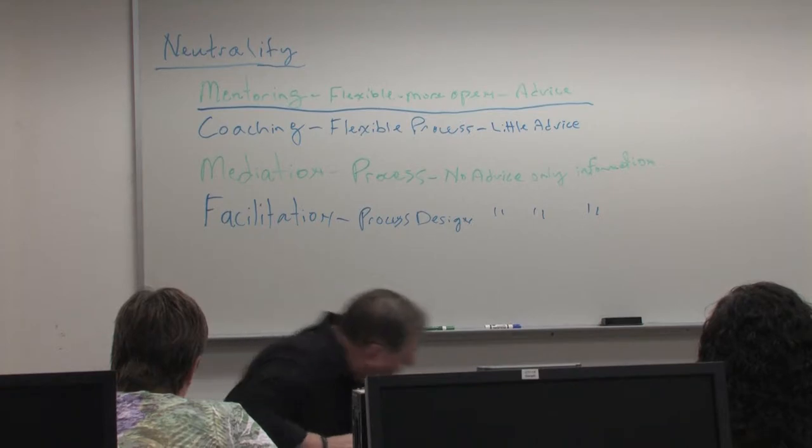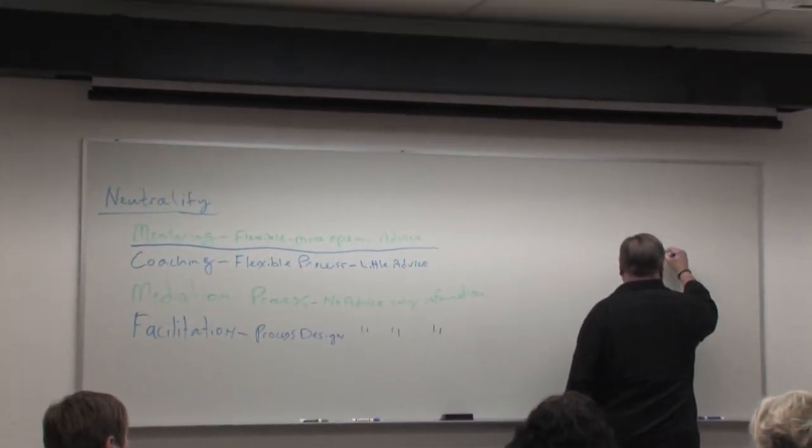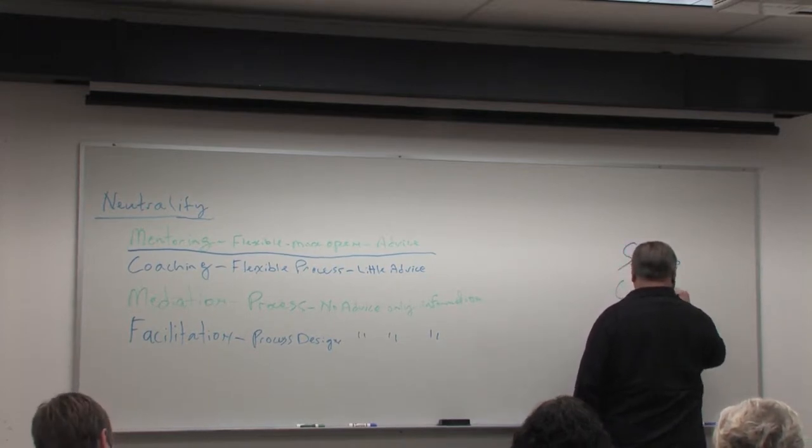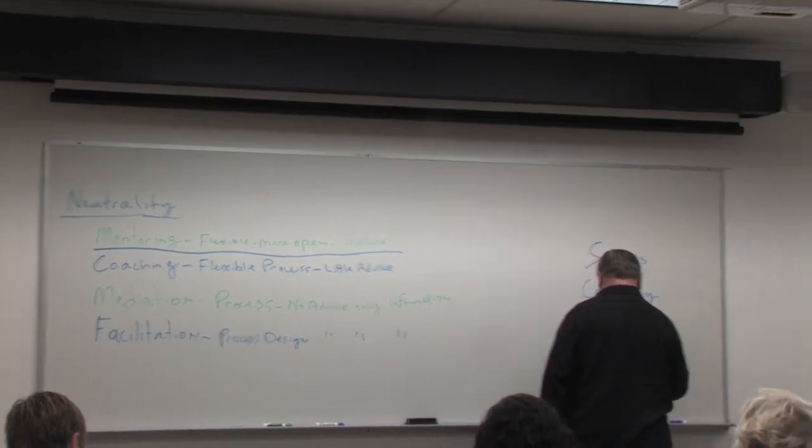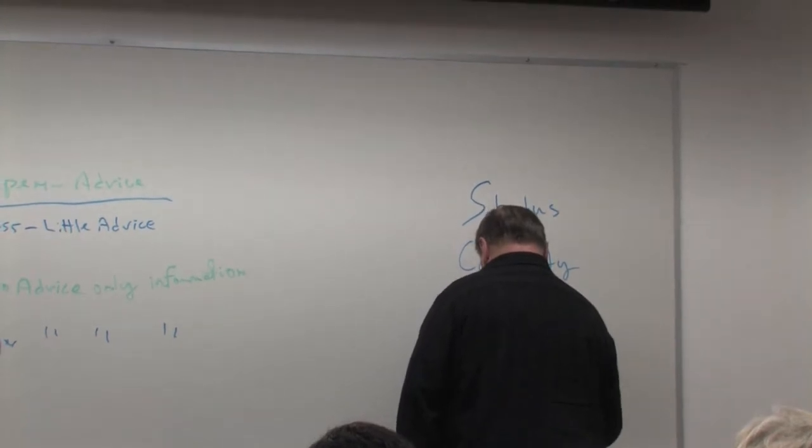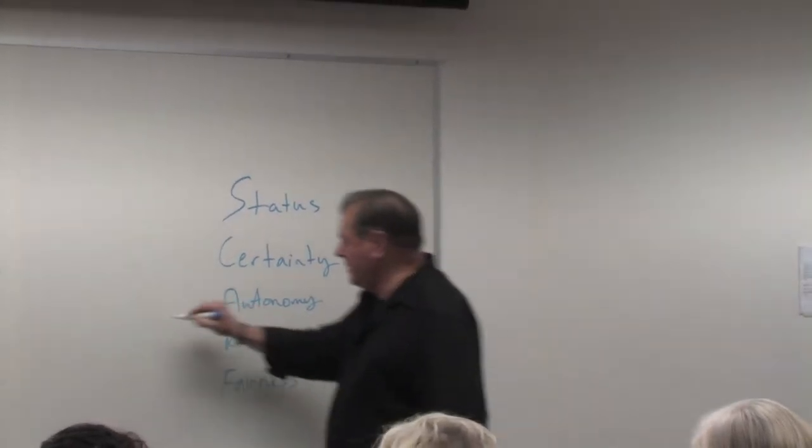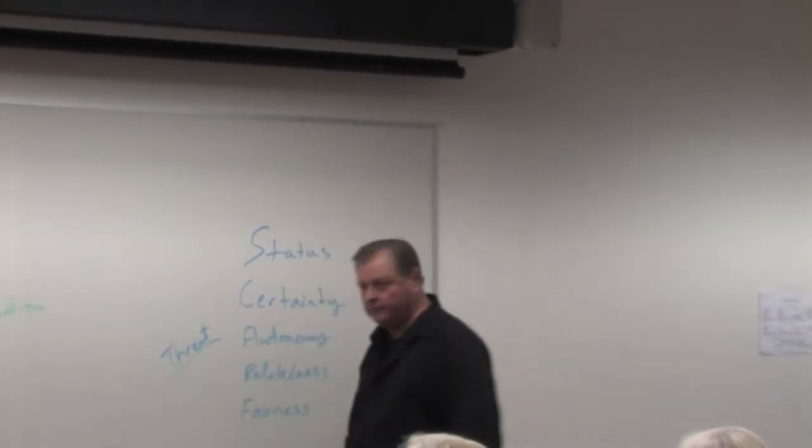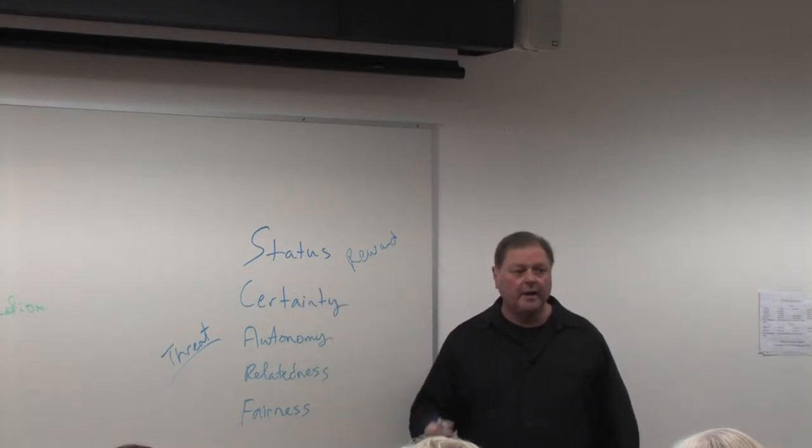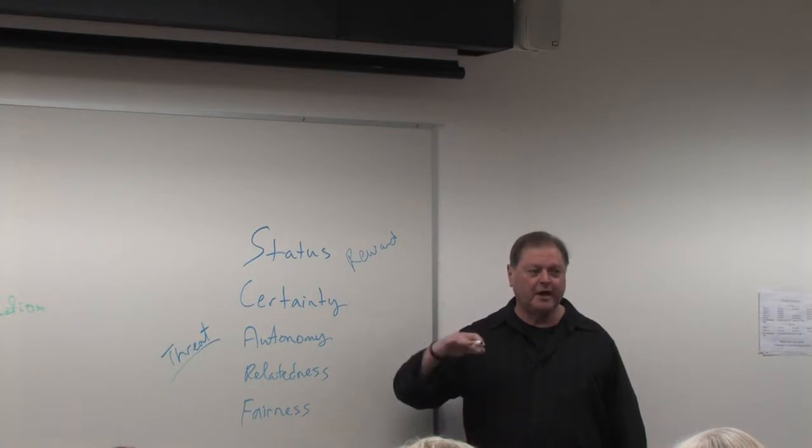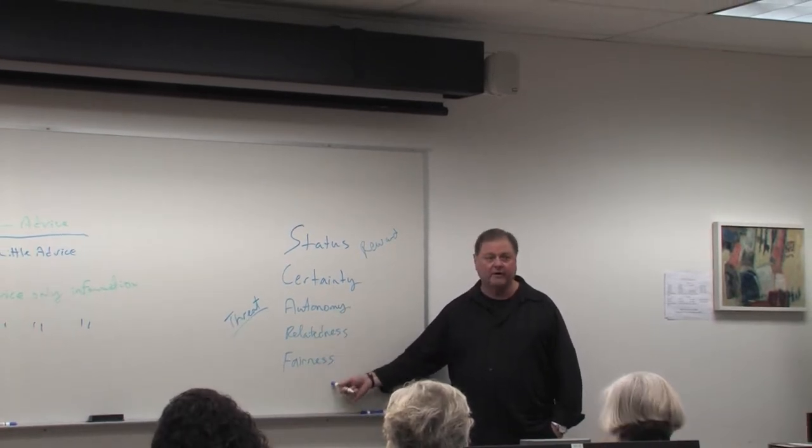So this is called the SCARF model. When you tell people, it sends them to threat. When you ask them, it sends them toward reward in each of these areas. So when you tell somebody something, automatically, I know more than you. And knowing is king in this society. It elevates your status, which puts their status down. They're uncertain because their autonomy is threatened. And their relatedness with you is threatened. And is it fair enough?